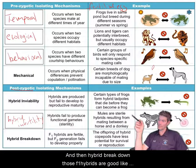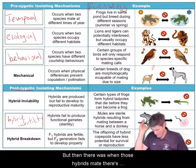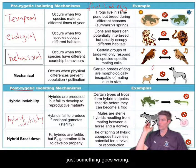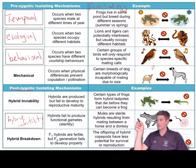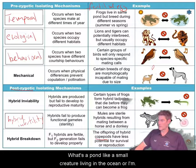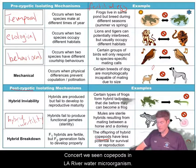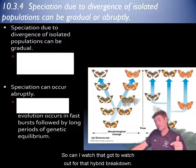Hybrid breakdown — those F1 hybrids look good, like the first generation looks fine, but then when those hybrids mate, something goes wrong and they just don't develop properly. A copepod — like a small creature living in a pond or ocean; we've seen copepods in LA River water, a microorganism — would be an example. So watch out for that hybrid breakdown.